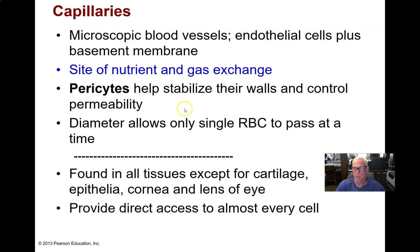Blood capillaries are the site of nutrient and gas exchange. They are single-cell thick tubes, and there are pericytes interspersed on the walls of blood capillaries. The capillaries are so narrow that red blood cells have to squeeze into them. As the blood is forced into the capillaries, the elastic red blood cells squeeze in single file and get pushed down the capillaries until they pop out the other side into a venule. This forces the capillary wall to touch the red blood cell all around, and since hemoglobin is peripherally located in the red blood cells, there's a minimum distance for oxygen diffusion.